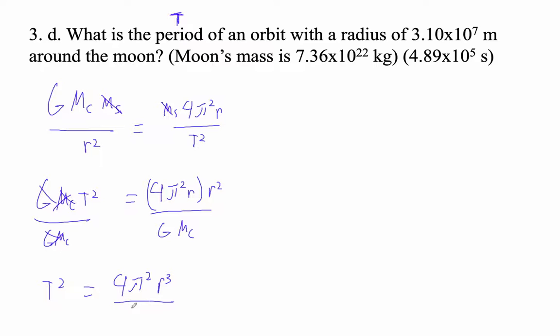So then T is the square root of 4 pi squared r to the 3rd over G M_c.